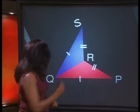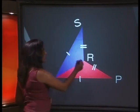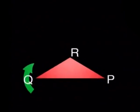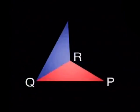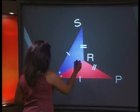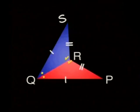Now, does the diagonal QR bisect the angles at Q and R? Let's flip this triangle to check. Yes, these angles at Q and R are equal. Remember, they came from the same original triangle.